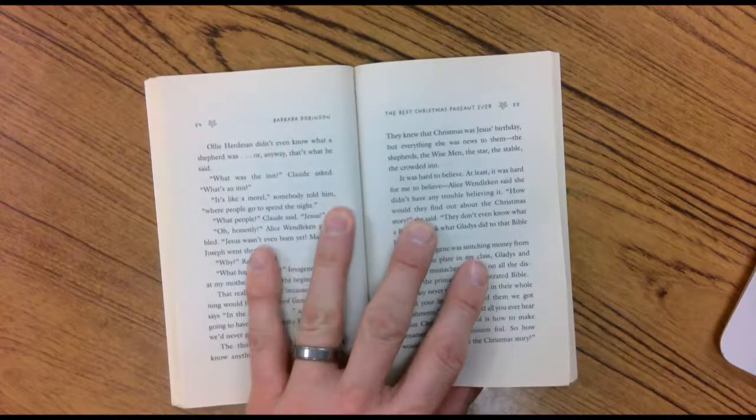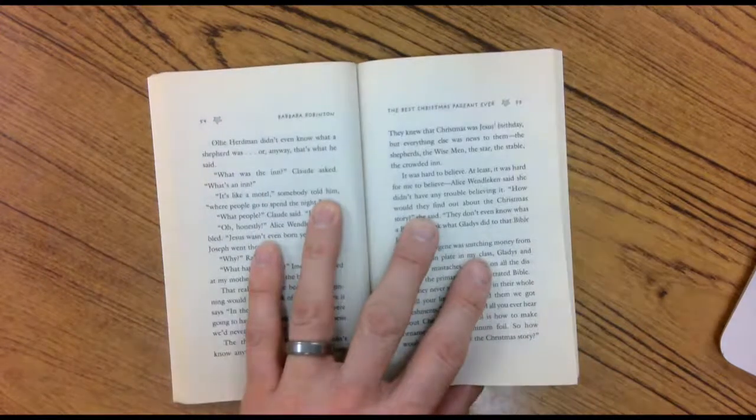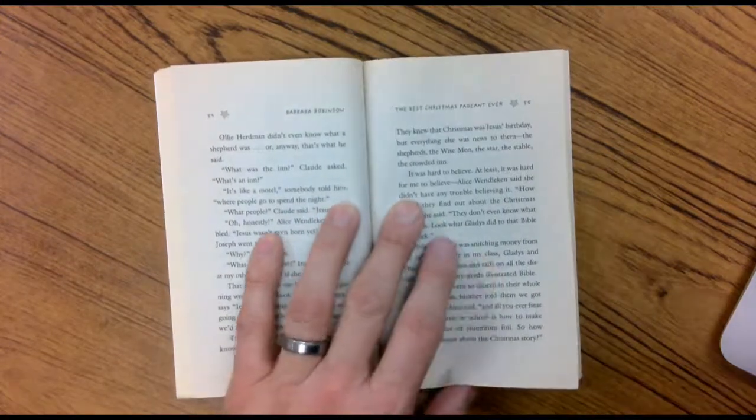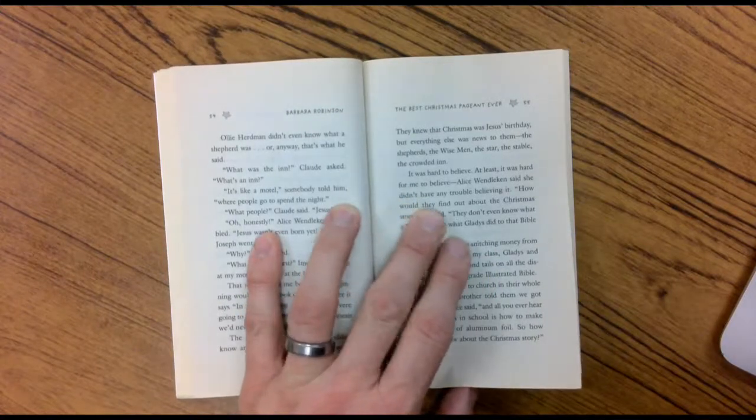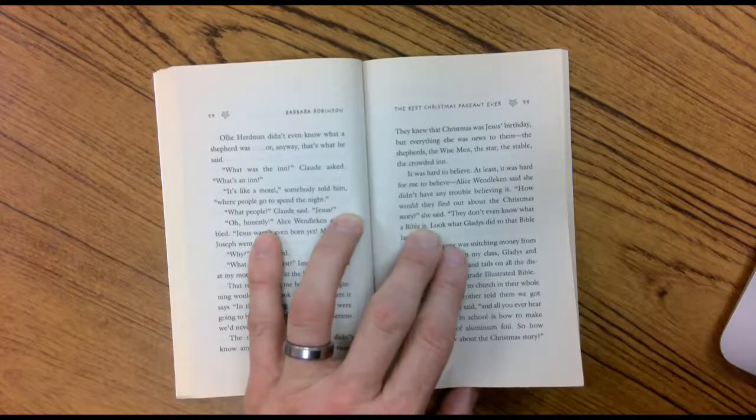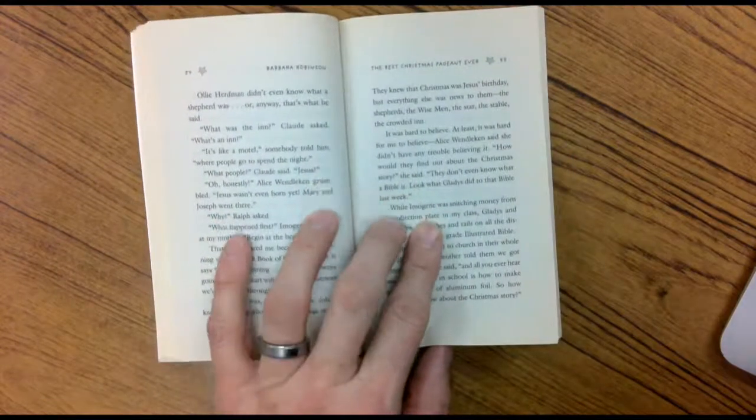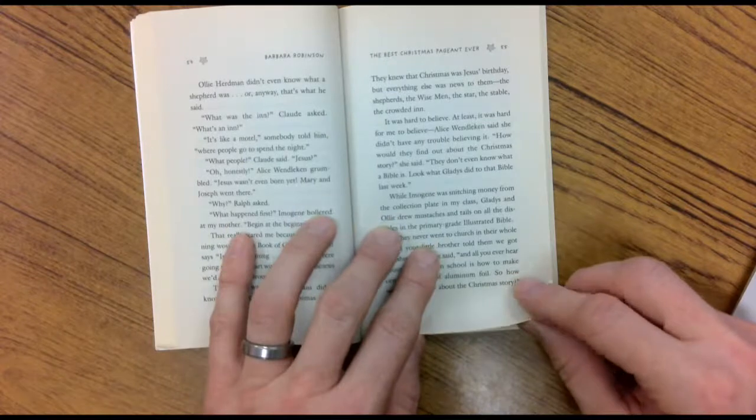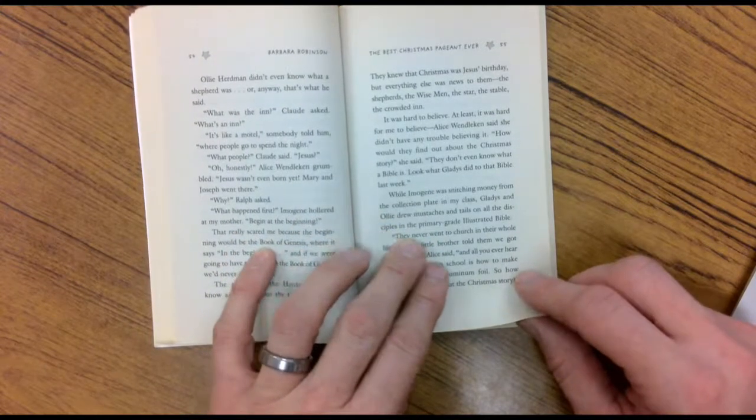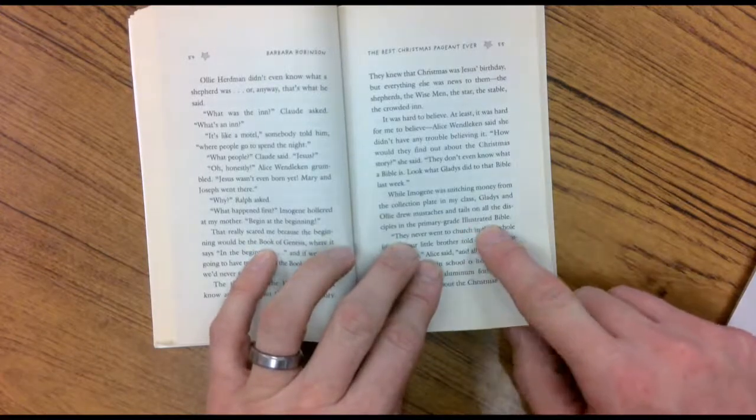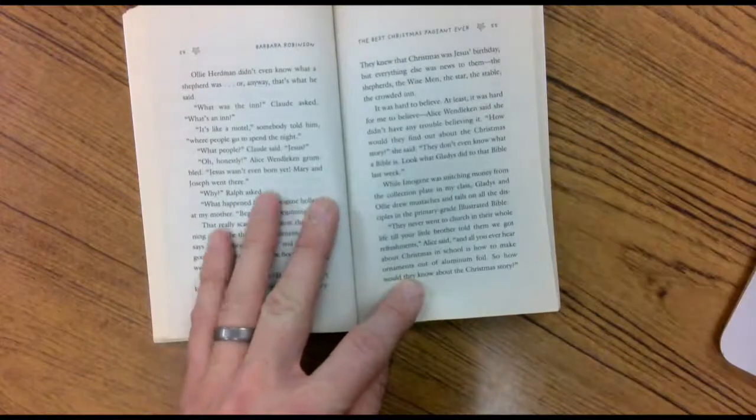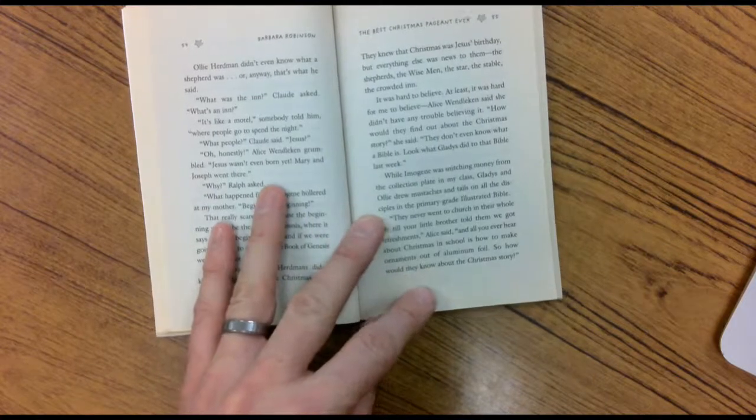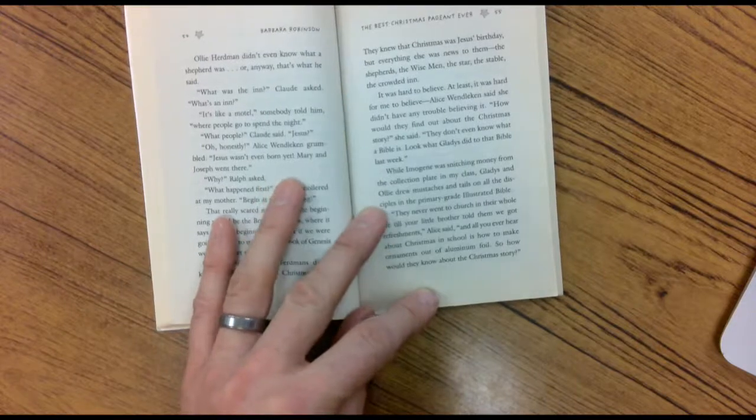They knew that Christmas was Jesus' birthday, but everything else was news to them. The shepherds, the wise men, the star, the stable, the crowded inn. It was hard to believe. At least, it was hard for me to believe. Alice Wendekin said she didn't have any trouble believing it. How would they find out about the Christmas story? She said they don't even know what a Bible is. Look at Gladys. Look what Gladys did to the Bible last week. While Imogene was snitching money from the collection plate in my class, Gladys and Ollie drew mustaches and tails on all the disciples in the primary grade illustrated Bible. They never went to church in their whole life until your little brother told them we got refreshments, Alice said.